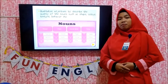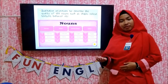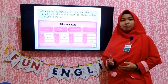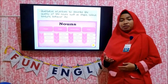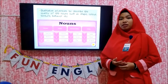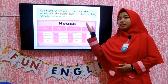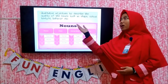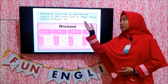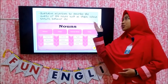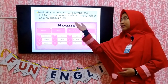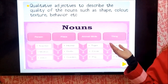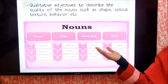Do you know about adjective? Actually, adjective — there are some types of adjective. But today, we will learn about qualitative adjective. Qualitative adjective is used to describe the quality of the nouns, such as shape, color, texture, behavior, and etc.